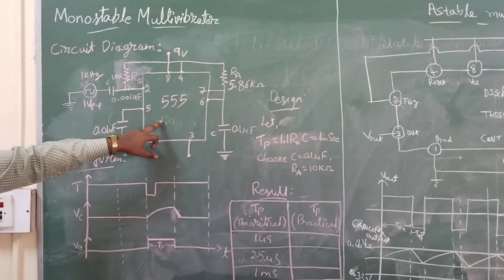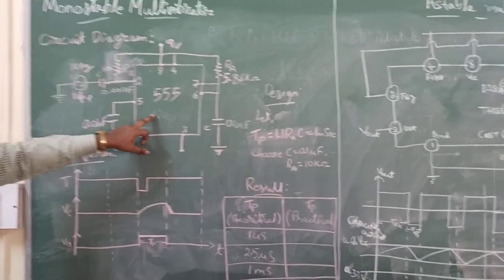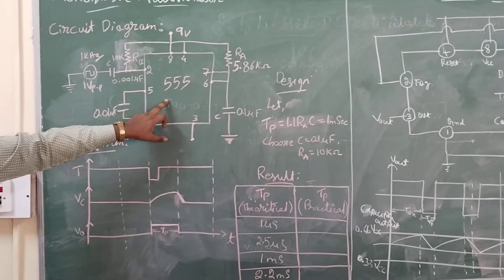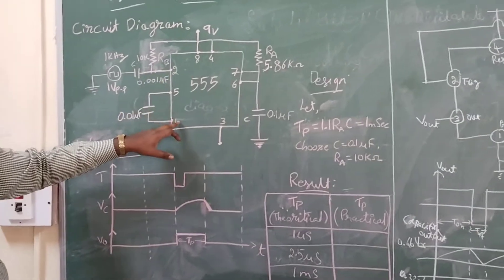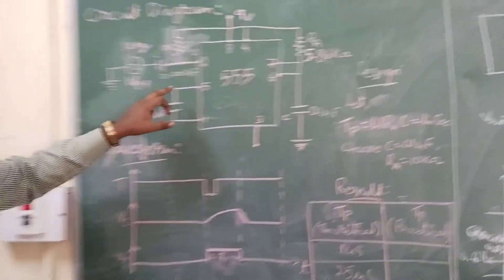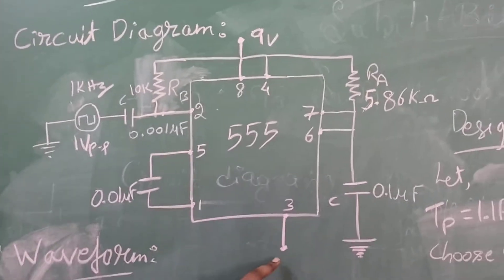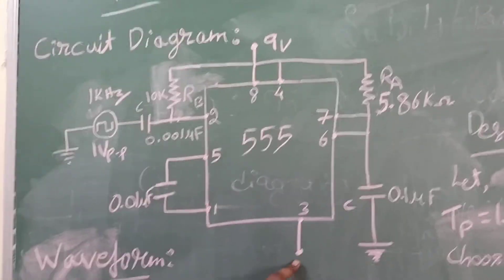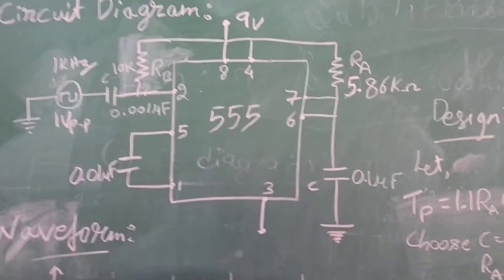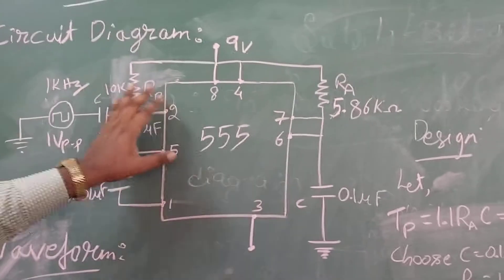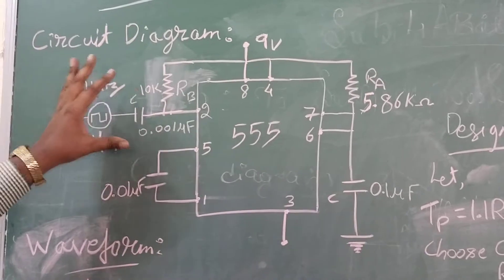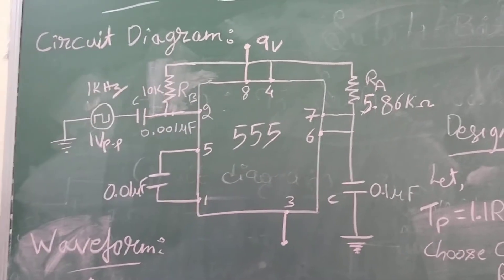This is the circuit of the monostable multivibrator using the 555 timer. Here we can see this is the input. The 555 timer has 8 pins, that is pin number 1 to 8. At pin number 2, we are giving the input trigger pulse, and here we are taking the output at pin number 3. And here, at the capacitor, we are taking the output of the capacitor. These are the resistances — we have taken RA, RB, and all those things. This is the circuit of the monostable multivibrator.